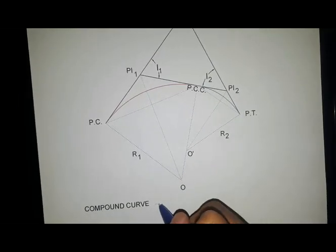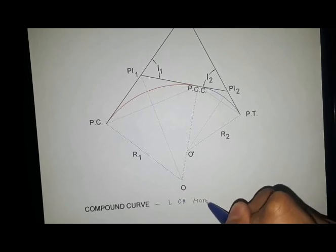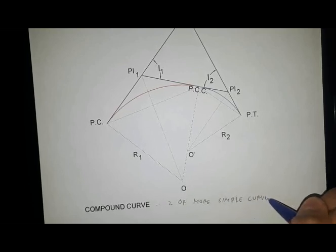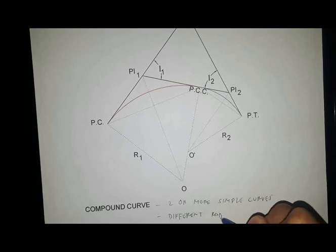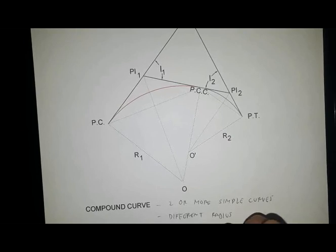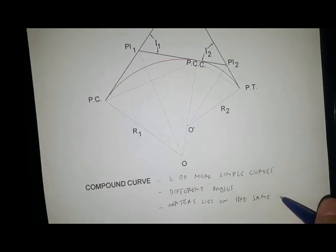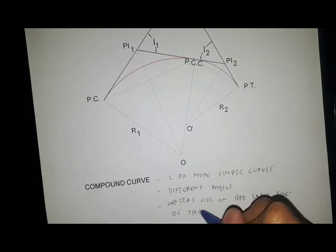The keywords for this definition are: two or more simple curves, different radii, centers lying on the same side of the curve.